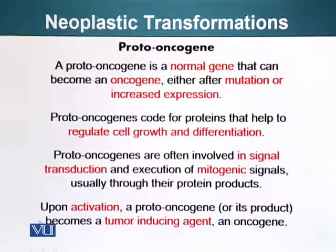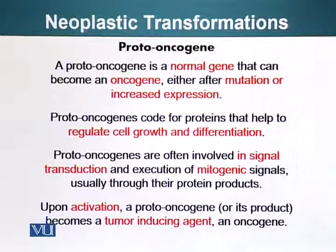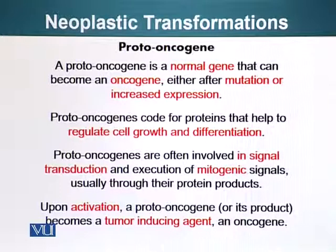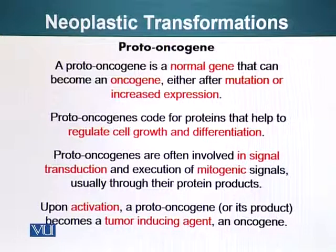First of all, I would like to introduce you to a special class of genes: proto-oncogenes. Proto-oncogenes are actually normal genes that become oncogenes either after a mutation or increased expression. An oncogene is basically a gene whose product can cause cancerous changes in the cell. Proto-oncogene means before an oncogene becomes an oncogene, it is called a proto-oncogene. These genes perform normal functions when they are normal and their gene product is normal, performing normal and essential functions for cells.